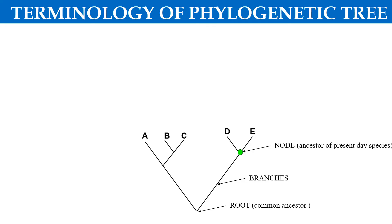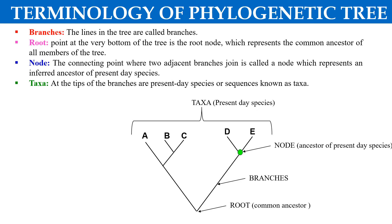This root represents the common ancestor of all the species. Where this main branch is joined and where the present day branch is joined, that is known as the node. This node gives information about the ancestor of present day species. And A, B, C, D, E — these represent the taxa, which represent the present day species. So by this, you can understand the branches, the role of root and node, and the terminal species called taxa.